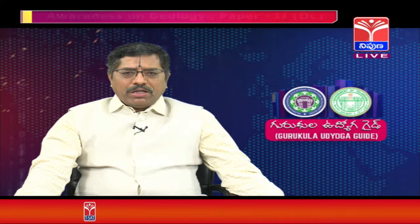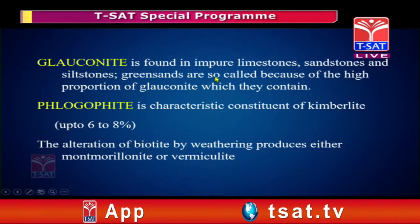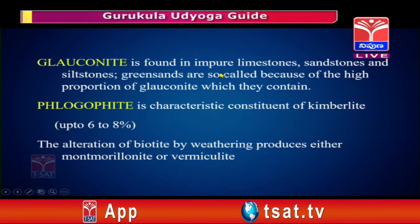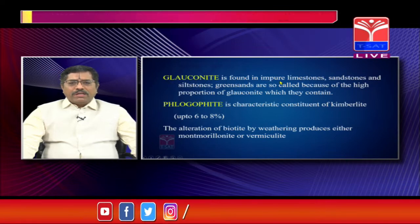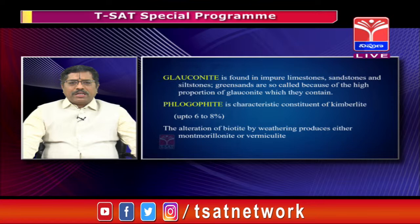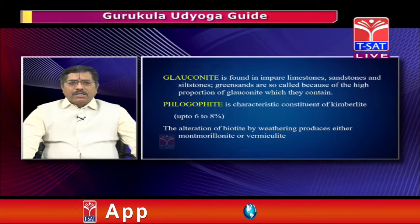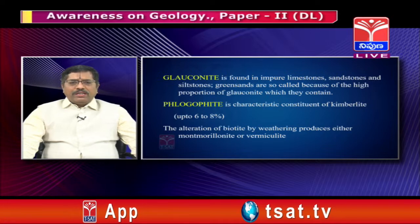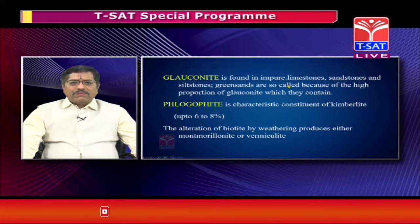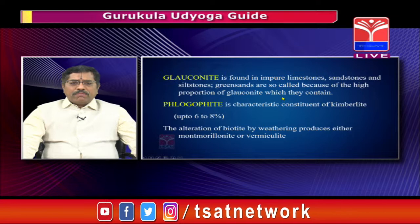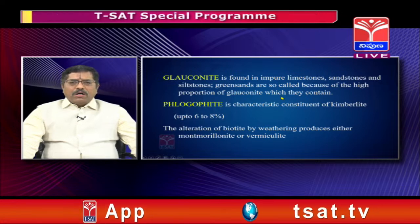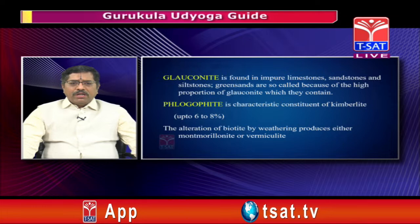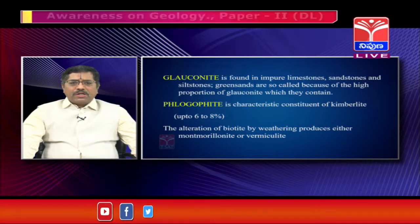Glauconite is another important mineral in the mica group which occurs in greensands. The mica occurring in greensands is called glauconite. Phlogopite is another characteristic mineral of kimberlites — the mica occurring in kimberlites is phlogopite, up to six to eight percent. By alteration, biotite weathers to montmorillonite and vermiculite, which are clay minerals. So micas on weathering form clay minerals.